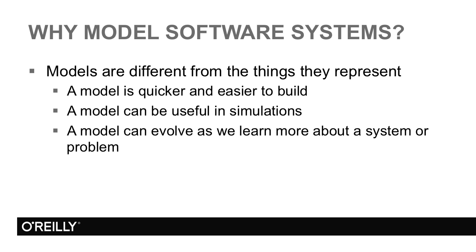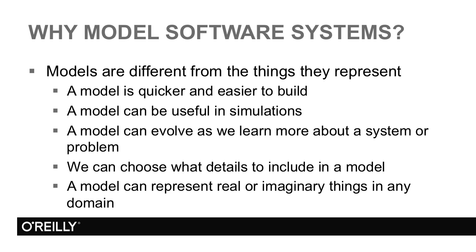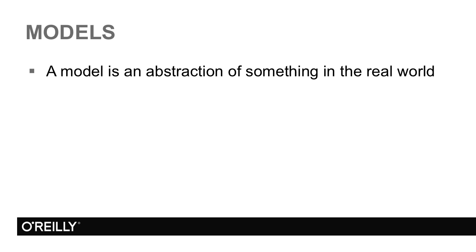A model isn't necessarily static. It can evolve and grow as we learn more about the system. We can choose what details to include in the model. It doesn't have to be everything. Remember it's an abstraction. A model can represent real or imaginary things in any domain. And that's a key point. A model is an abstraction. You shouldn't expect it to be the same as the thing it represents.